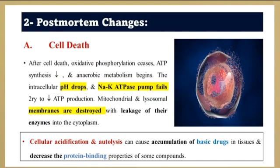The second factor is post-mortem changes. After clinical death, cell death occurs. Oxidative phosphorylation ceases and ATP synthesis decreases. Anaerobic metabolism begins with accumulation of lactic acids. Therefore, the intracellular pH drops, the sodium-potassium pump fails, and the cellular membranes are destroyed with leakage of mitochondrial and lysosomal enzymes into the cytoplasm. Cellular acidification and autolysis can cause accumulation of basic drugs in tissues and decrease the protein binding properties of some components.